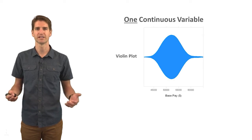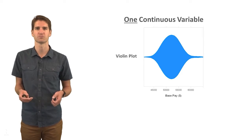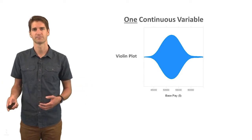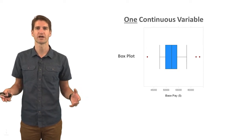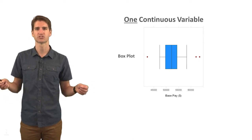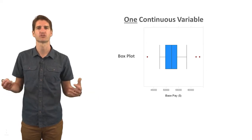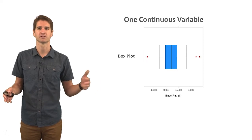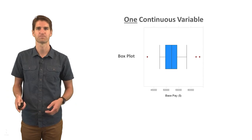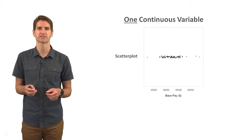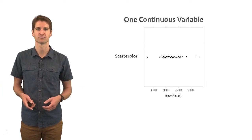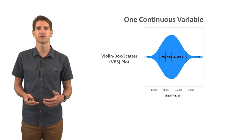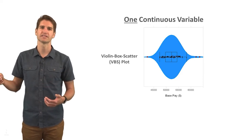Another way we can visualize a continuous variable is using a violin plot. Here's base pay, and we can see a symmetrical distribution — looking at just the top half, it looks like a normal distribution. This can give you an idea of the extent to which your data are skewed or kurtotic. If we're trying to detect outliers and understand the interquartile range, we can use a box plot. The red circles that fall outside the whiskers represent potential outlier values or extreme scores. The blue box represents the interquartile range, where the upper side is the 75th percentile, the lower is the 25th percentile, and the very middle is the 50th percentile — the median. We can also combine everything into a VBS plot, or violin box scatter plot, where you see the violin plot with a box plot overlaid and a scatter plot on top of all of that.